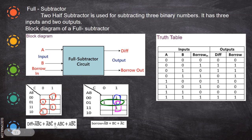Then for the borrow output, again you find where the ones are, form the groups, and when you simplify you will get the borrow equation like this.